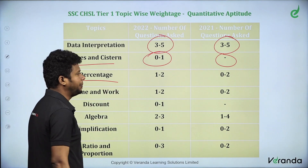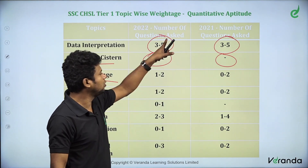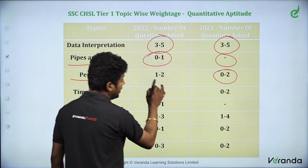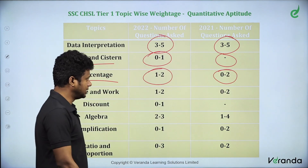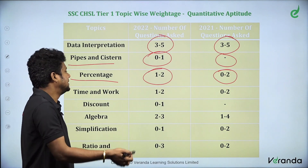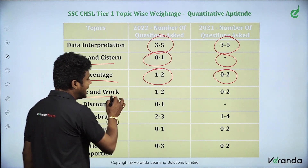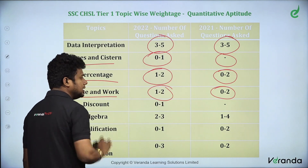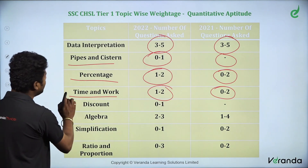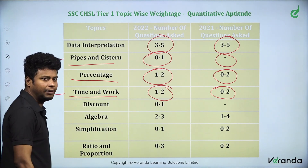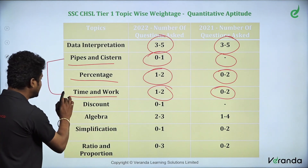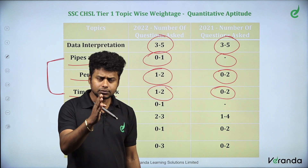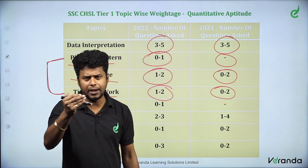The next topic is Percentage. Because you know percentage, you can solve those questions and answer 1 to 2 questions. The priority of percentage is increased. For Time and Work, you can answer 0 to 2 questions; there are about 2 questions on Time and Work. Time and Work and Pipes and Cisterns are related, so if you study one, the other becomes easier.